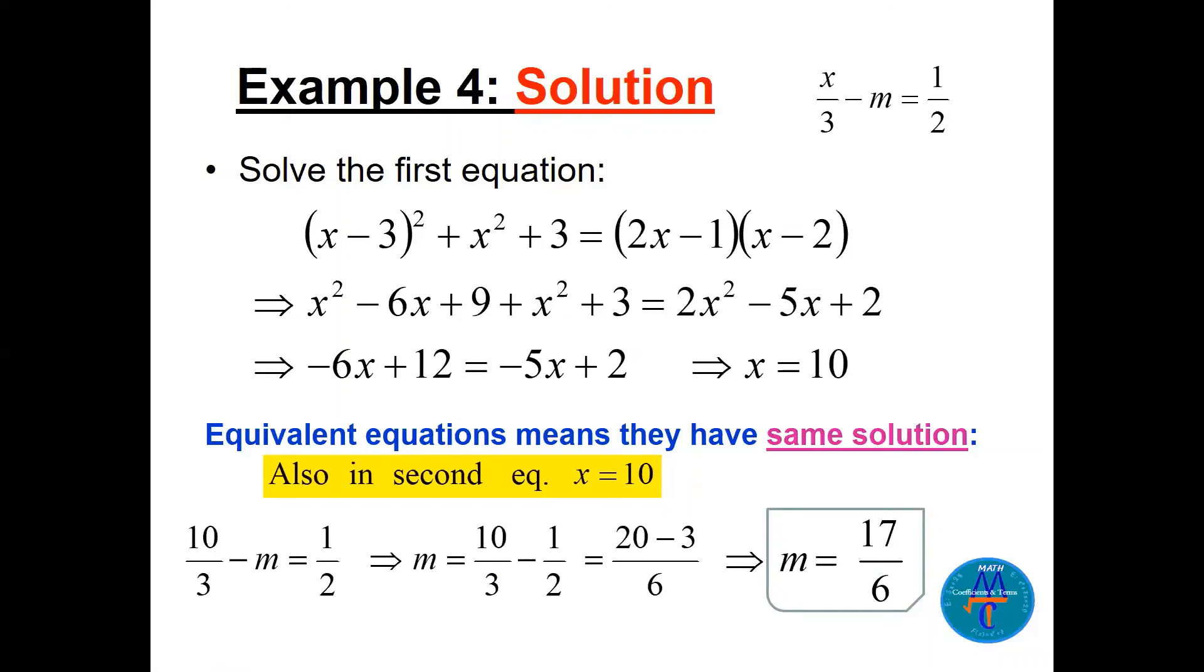So the solution of the first equation is 10. That means the solution of the second equation is also 10. But 10 is the x. So I take this 10 here and replace it here. See, 10, 10 over 3 minus the m equals half. Simple, easy equation to find m, but you have fractions. Take m on the other side, take half on this side. So 10 over 3 minus half, the LCD is 6, 20 minus 3, 2 times 10, 1 times 3, 17 over 6 is the value of m. Really nice question about equivalent.